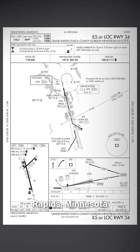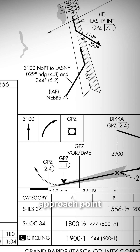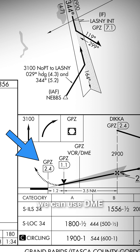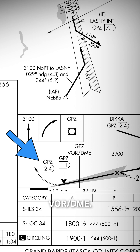We're going to start in Grand Rapids, Minnesota, with the ILS or localizer to runway 34. If you take a look at the missed approach point for the localizer procedure, you can see that we can use DME to identify that point, and we know that because our DME distance is printed inside of the D icon — 2.4 DME from the Grand Rapids VOR DME.